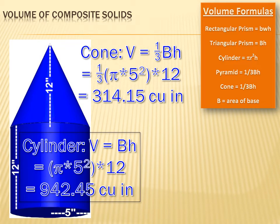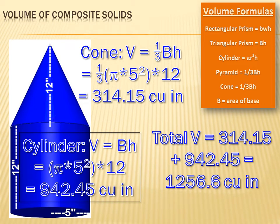How about the cylinder? The volume of the cylinder is pi r squared h, or 3.14 times 5 squared times 12, or 942.45 cubic inches. Now all I got to do is add those two numbers together. 314.15 plus 942.45 equals 1,256.6 cubic inches.